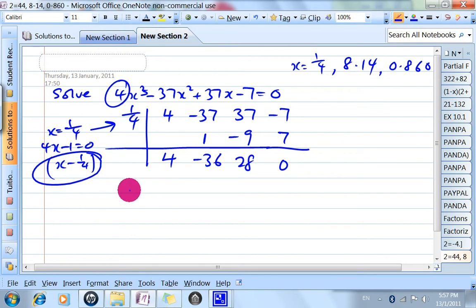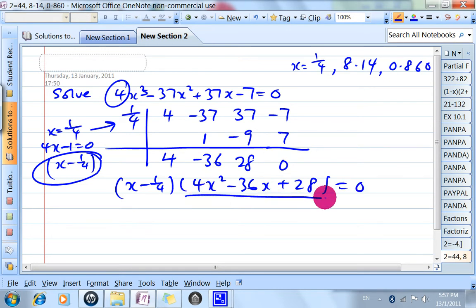Write (x - 1/4)(4x² - 36x + 28) = 0. Put a common factor of 4 from here and put it inside here. We get (4x - 1), multiply this by 4, divide this by 4, to get x² - 9x + 7.